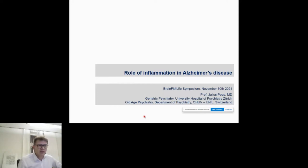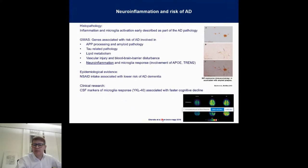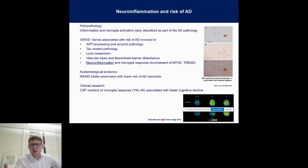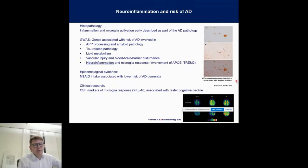I will start with perhaps the most important question: whether this is relevant. Neuroinflammation occurs in AD, as you know. It was first described by Alois Alzheimer himself in the first patients he examined post-mortem. He already described inflammation — microglia activation surrounding the amyloid plaques. This is well established, occurring in the brains of people with Alzheimer's pathology. You have here a graphical representation from one study we published, but this is very well established.